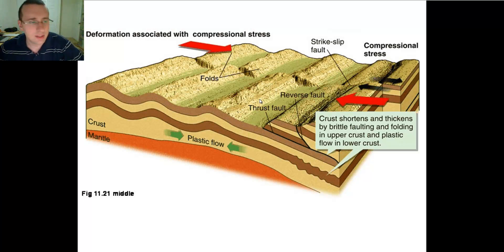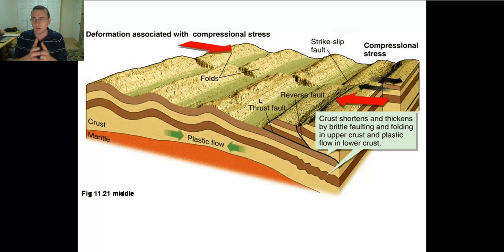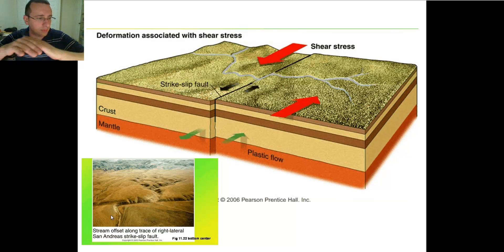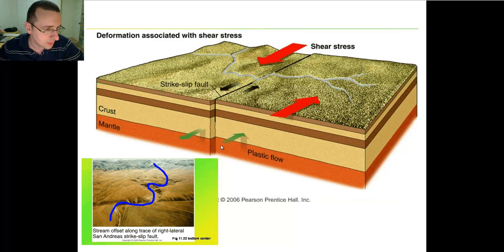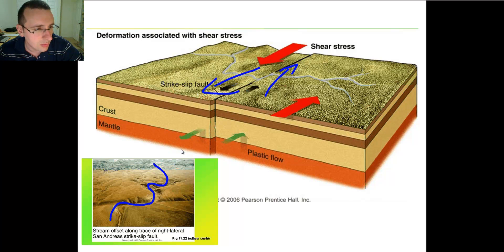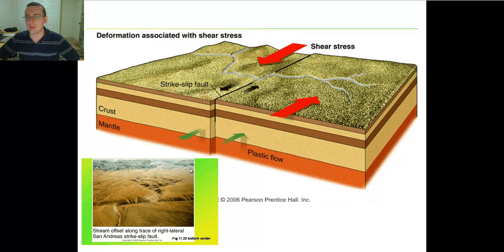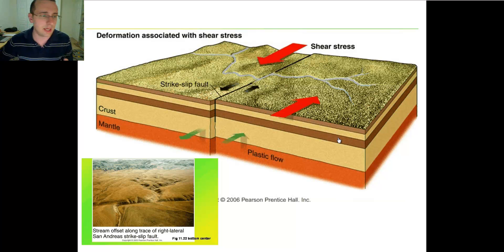When you have shear stress — not the longitudinal stress causing compression or tension, but two pieces being pushed in different directions — the rocks fold weirdly to the side, making S-shapes at the surface. At the same time, you also have lateral movement, what we call strike-slip faults. Those are the basic features you will see at each kind of boundary, and that's how you can recognize the boundaries and their types.